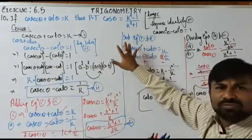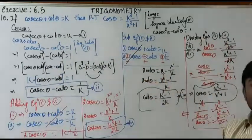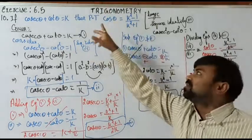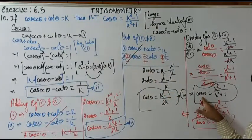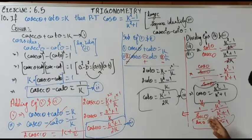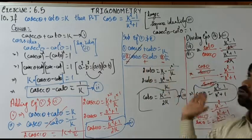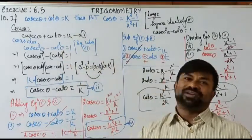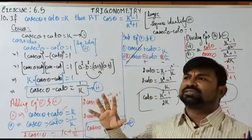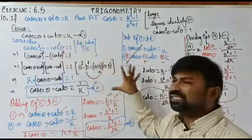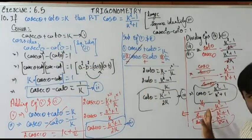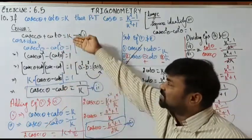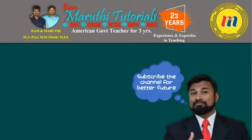The approach is the same: add the equations, subtract the equations, then divide equation 4 by equation 3. The question may ask for sin or cosecant as the result, and the variable may be k, p, or any letter. In total there are about six variations of this type of question — two using square identity 3 with cosecant and cot, and two more using square identity 2 with secant and tan.